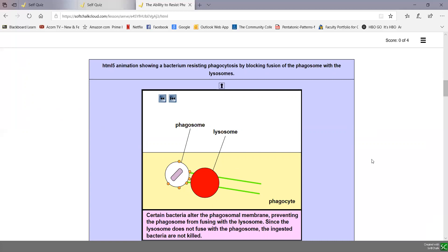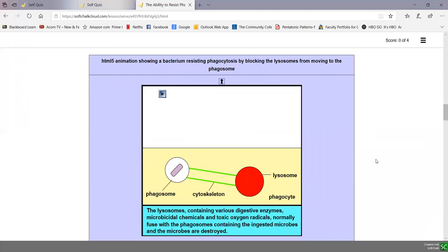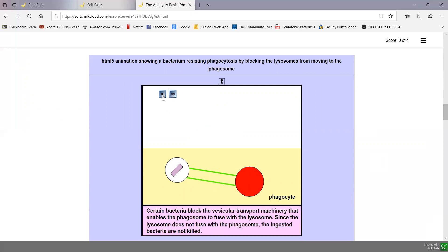Some can also produce molecules that prevent the lysosome from ever reaching the phagosome, typically by interfering with the cytoskeleton along which the lysosome moves in order to fuse with the phagosome, as we see here.